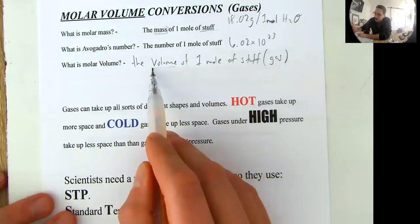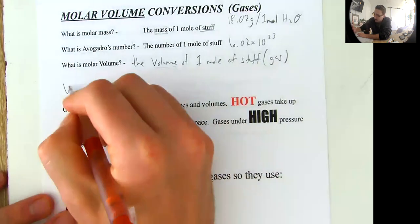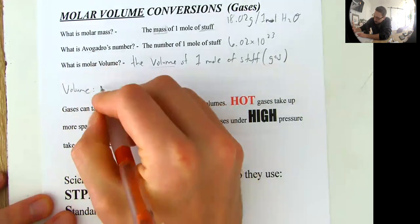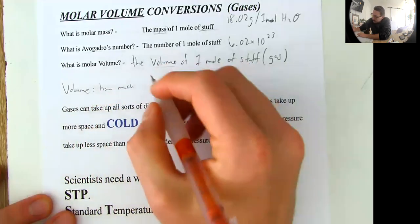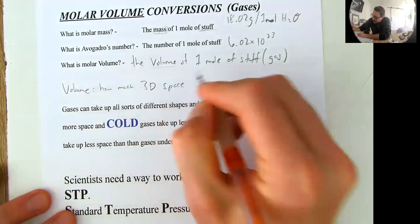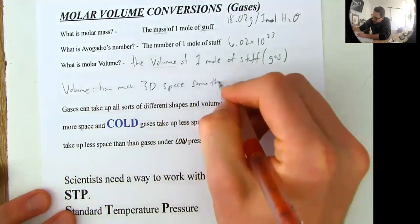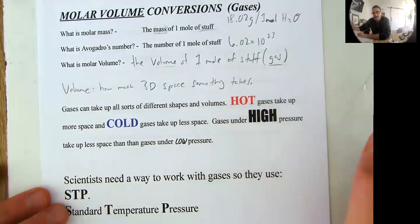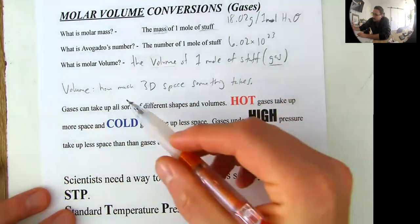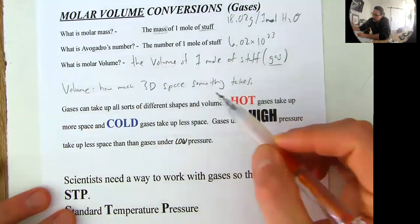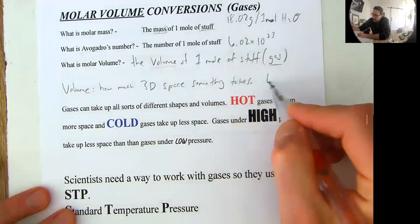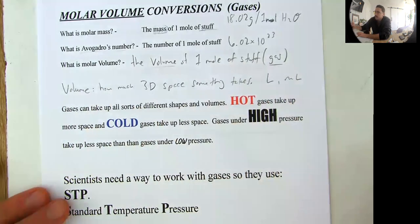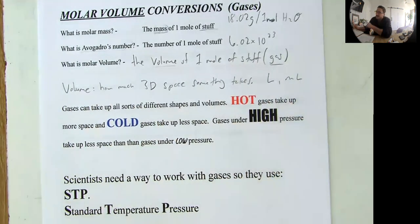Okay, so what is volume? Remember, volume is how much space something takes up. So let's write that. How much, we're going to say three-dimensional space something takes. And just because you can't see a gas doesn't mean it's taking up space. Okay, so volume is how much three-dimensional space something takes up. And you can measure this with liters or milliliters or things like that.